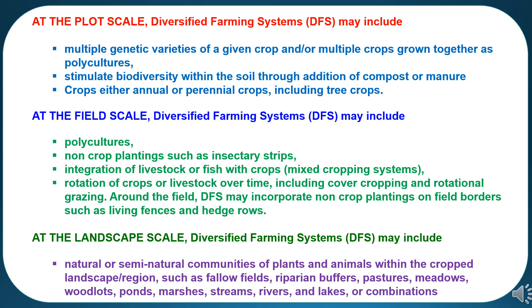At the plot scale, diversified farming systems may include multiple genetic varieties of a given crop or multiple crops grown together as polycultures, stimulate biodiversity within the soil through addition of compost or manure, and crops — either annual or perennial — including tree crops.